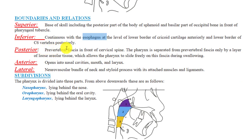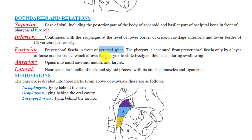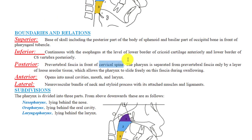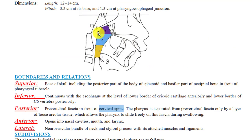The posterior boundary is in relation to the prevertebral fascia in front of the cervical vertebrae. The pharynx is separated from the prevertebral fascia only by a layer of loose areolar tissue, which allows the pharynx to slide freely on the fascia during swallowing.